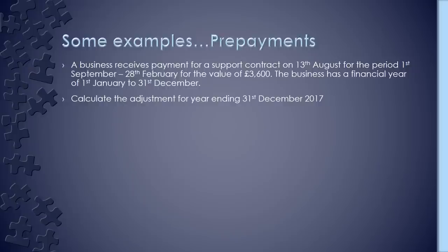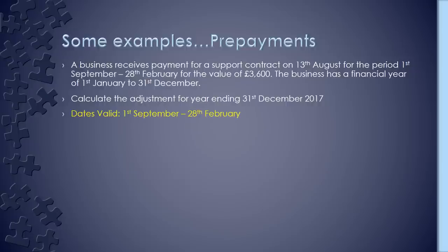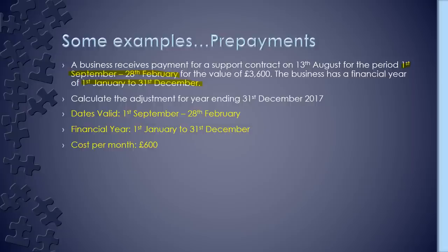Now let's look at prepaid income. A business receives payment for a support contract on 13th August for the period 1st September to 28th February for £3,600. The business has a financial year of 1st January to 31st December. Calculate the adjustment for year ending 31st December 2017. Key information: the contract runs September to end of February, financial year is January to December, and cost per month is £3,600 ÷ 6 months = £600.